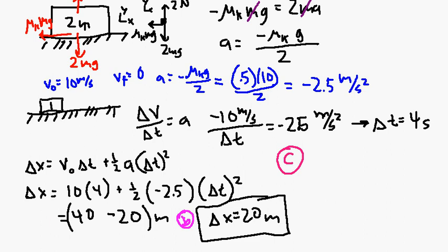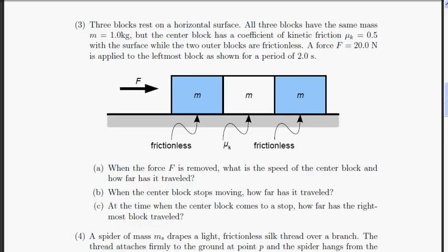Part C is, what about that third block? Let's look back at the problem statement. The third block, how far has the rightmost block traveled? Well, no friction, right? So it got accelerated up to 10 meters per second with the rest of these guys at the beginning. And then it just kept cruising.